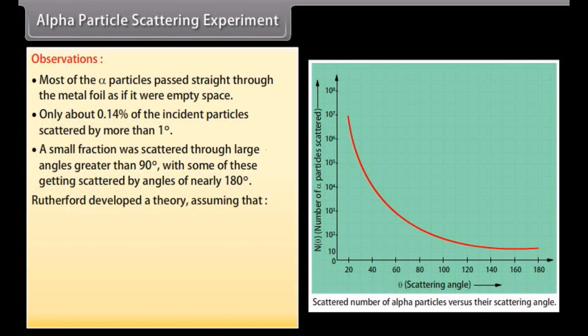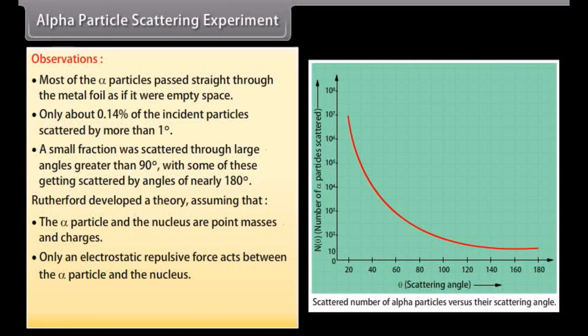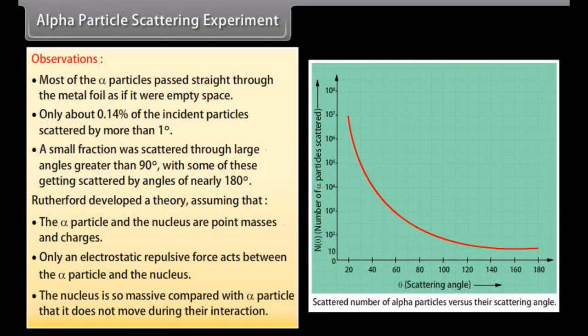Rutherford developed a theory assuming that the alpha particle and the nucleus are point masses and charges. Only an electrostatic repulsive force acts between the alpha particle and the nucleus. The nucleus is so massive compared with alpha particle that it does not move during the interaction.